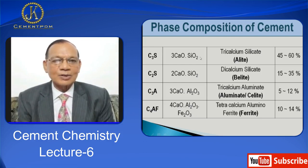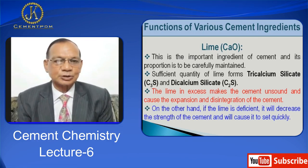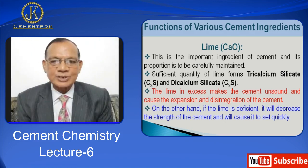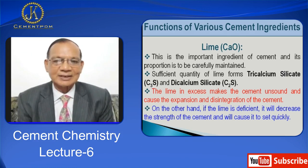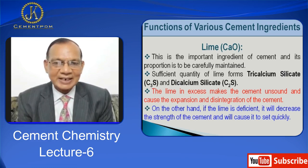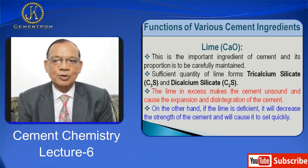C4AF is called ferrite and it contains 10 to 14%. Now I would like to talk about the functions of various cement ingredients. Lime, that is CaO, is the most important ingredient of cement and its proportion is to be carefully maintained. A sufficient quantity of lime forms tricalcium silicate C3S and dicalcium silicate C2S.